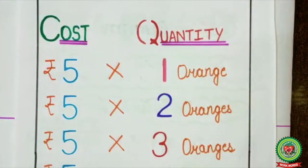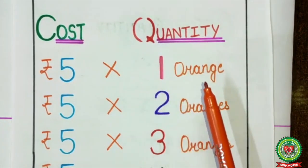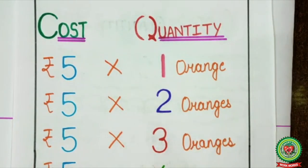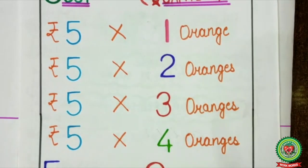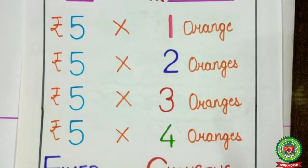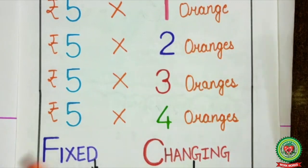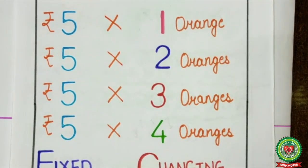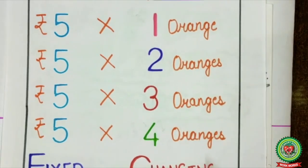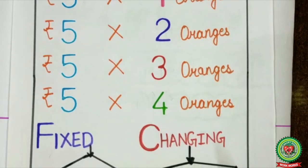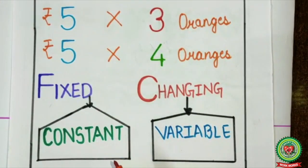Here, suppose if we want to purchase 1 orange and the cost of 1 orange is Rs. 5. So what will we pay? Rs. 5. For 2 oranges, Rs. 10. For 3 oranges, 5 threes are 15, we will pay Rs. 15. And for 4 oranges, we will pay Rs. 20. So, the value per orange will remain fixed, and the quantity is changing as per demand. So, the fixed value is known as a constant, and the changing value is known as a variable.